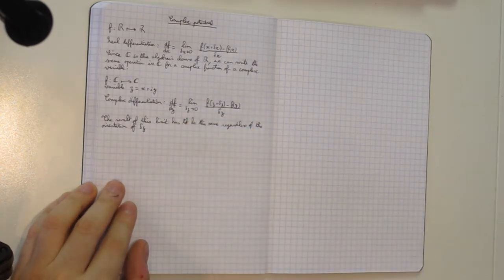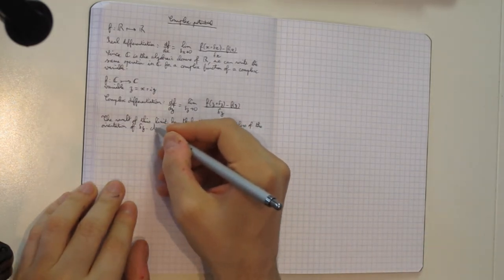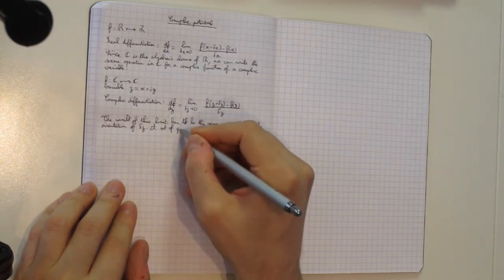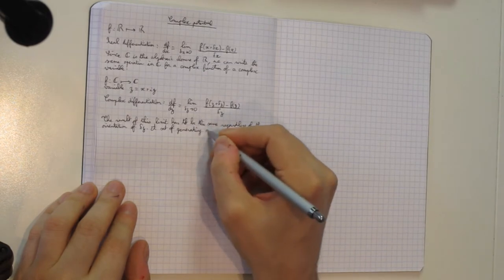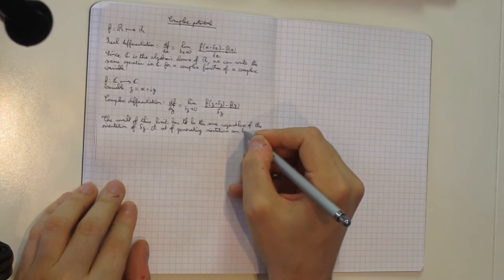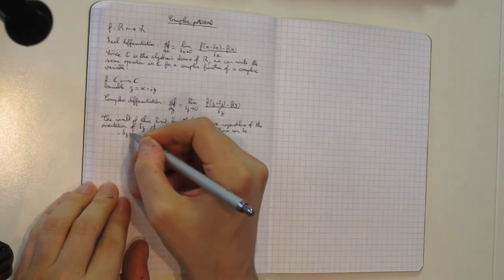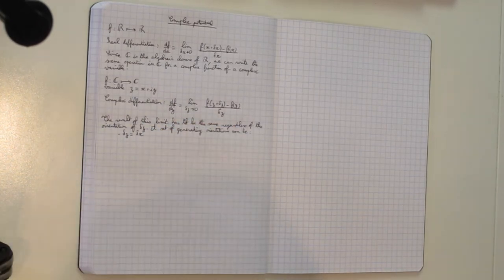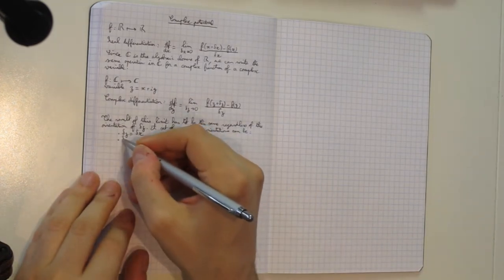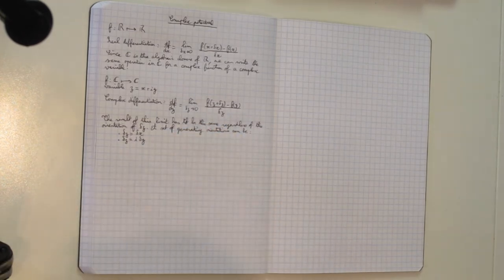We can define a set of generating orientations. For instance, Δz = Δx, which is the horizontal direction on the complex plane. And we can also have Δz = iΔy, which is the vertical direction on the complex plane.